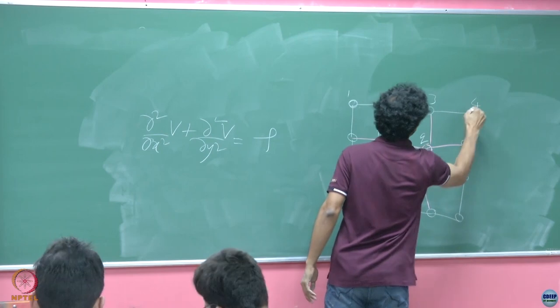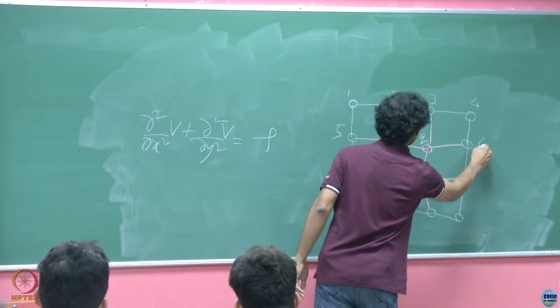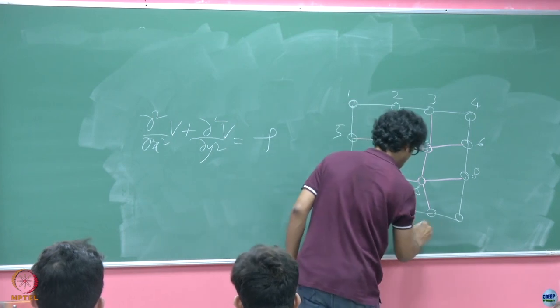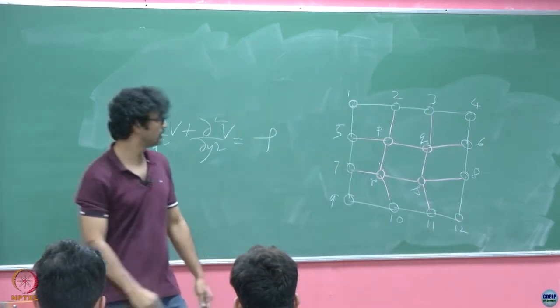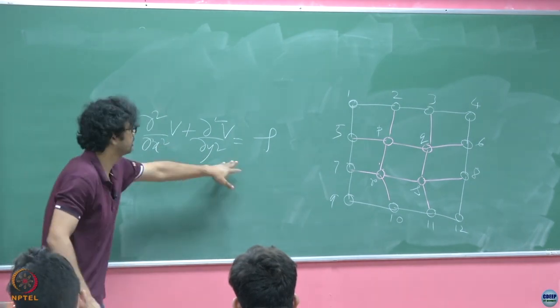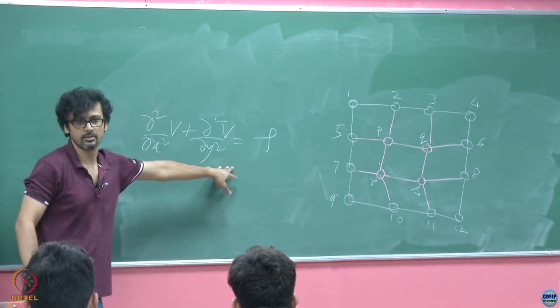Let us just give it a name. Let us call this point as P, Q, R and S. And let us say the potential at this point is V_P, V_Q, V_R and V_S. And let us say this is 1, 2, 3, 4, 5, 6, 7, 8, 9, 10, 11, 12. Let us just take the sample point P and pass it through the discretized version of this equation, shall we? So, what is the discretized version of this? What do you think it is?